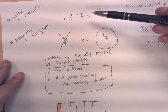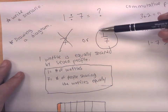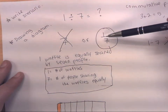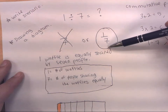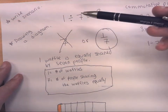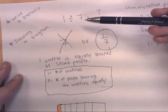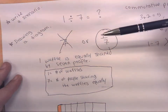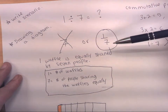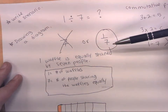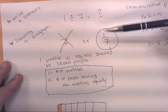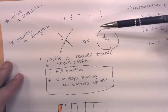Understanding that one divided by seven equals one-seventh, and recognizing that one-seventh is the same as dividing one by seven, is one of the key concepts students need to grasp during this second unit — fractions as division.